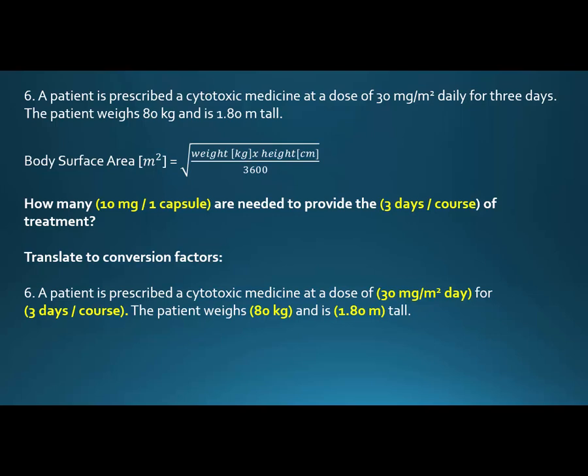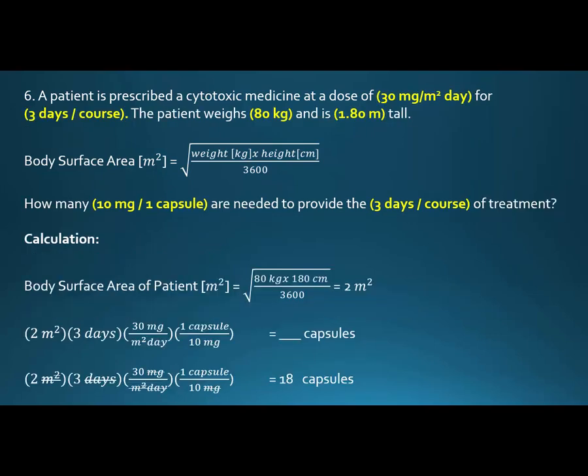Now let's plug values into the body surface area equation. Our weight is 80 kilos, and the height needs to be converted from meters to centimeters — so 180 centimeters. The 3600 is constant. We work the math and take the square root to get 2 meters squared — a nice number to work with.